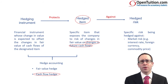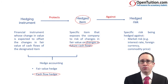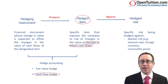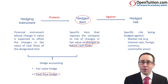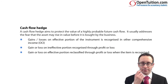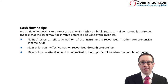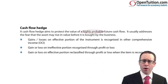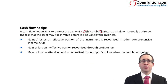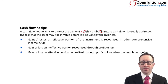What you do is you enter into a hedging instrument, and that hedging instrument is a derivative — basically a bet. You are going to place a bet on what you expect the outcome of your hedge to be. A key point to highlight is that it is a highly probable future cash flow — it is more likely than not that it is going to arise.